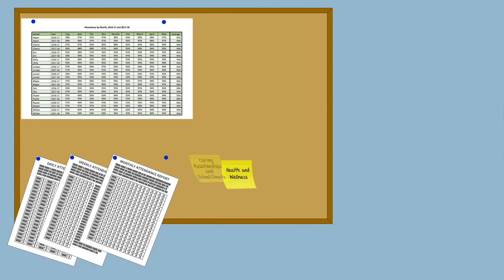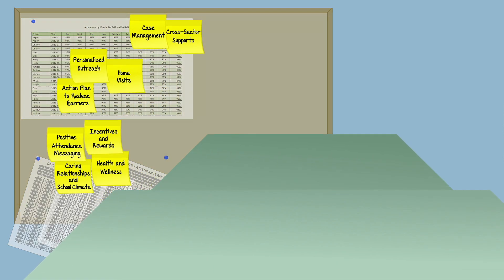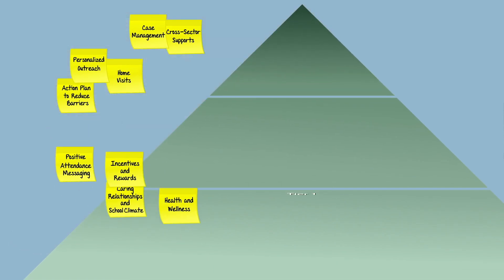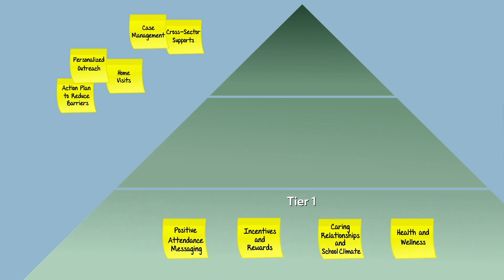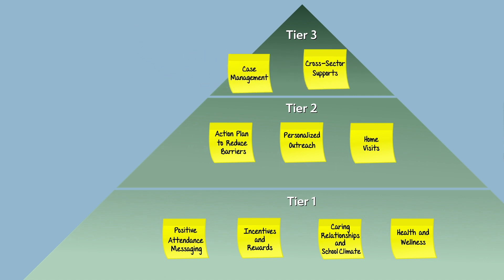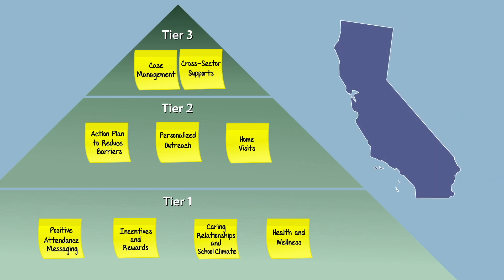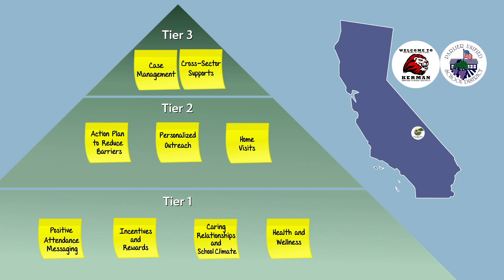Using local student-level data, we can design and carry out many promising strategies to reduce chronic absence. These strategies are typically organized into a multi-tiered approach, starting with Tier 1 prevention efforts and progressing to Tier 2 early interventions and Tier 3 more intensive interventions that boost attendance by removing barriers to learning and school success. Let's see what these tiered strategies look like in practice in three school districts in California's rural Central Valley — Kerman, Parlier, and Tulare.